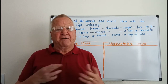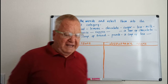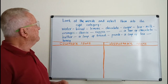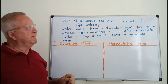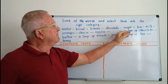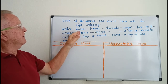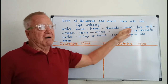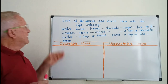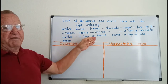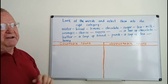Now we're going to look at these countable and non-countable nouns and put them into the right category. Here are the words: water, bread, lemons, chocolate, sugar, tea, milk, oranges, cheese, coffee, a bar of chocolate, butter, a loaf of bread, peach, a cup of tea, and honey.